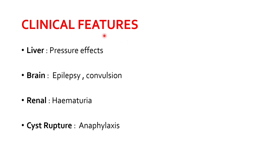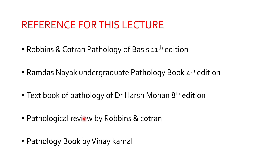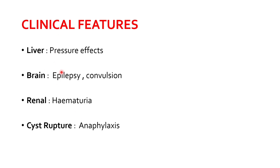The clinical features of hydatid disease: if the liver is involved, pressure effects, abdominal pain, and severe anaphylactic reaction upon rupture can occur. If the brain is involved, epilepsy and convulsions may occur. If the kidney is involved, the patient could complain of hematuria — blood in urine — due to traumatic injury to renal vessels or ureter. If the cyst ruptures, the patient could have anaphylaxis.